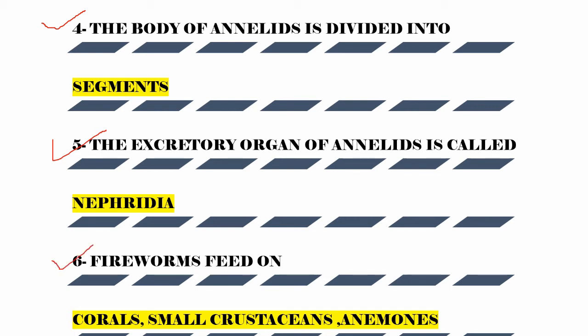The next question is: what do fireworms feed on? They eat coral. Fireworms feed on corals, small crustaceans, and other small animals. These are all the food sources of fireworms.